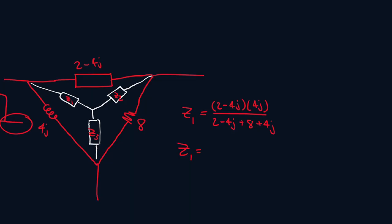So I get 1.6 for the real part and then plus 0.8j for the imaginary part. So that's what this portion is equal to.